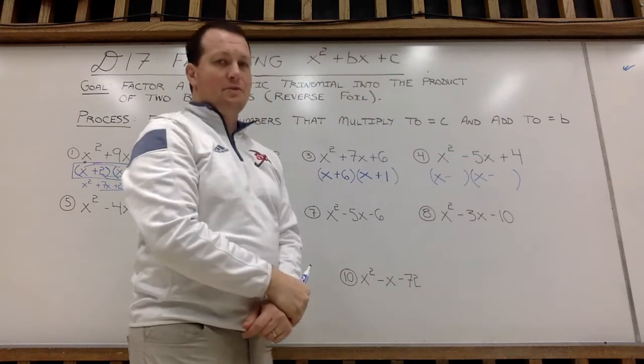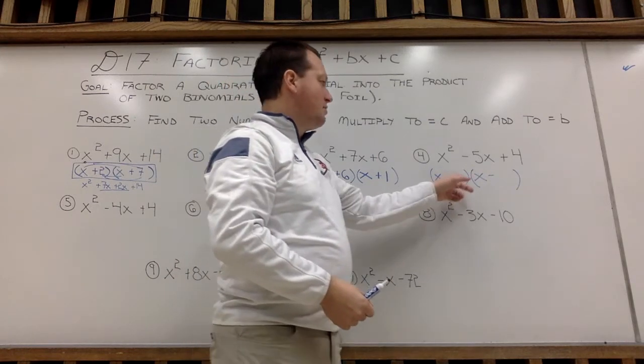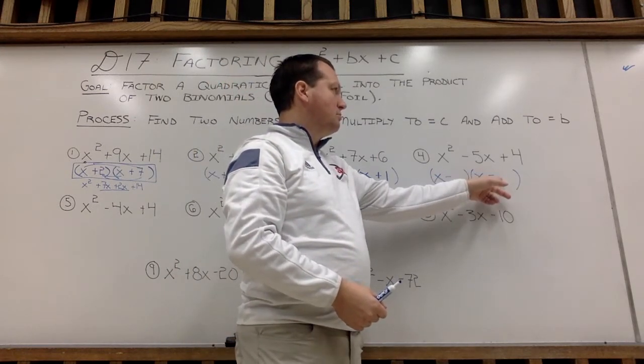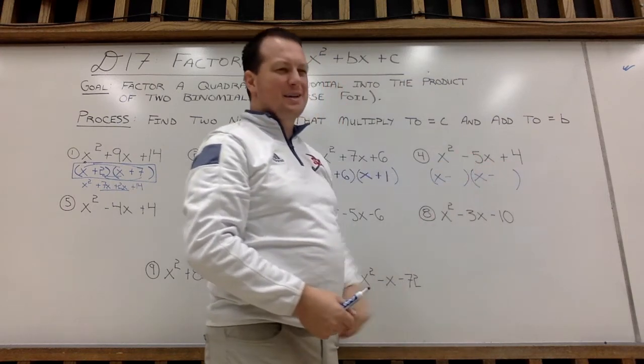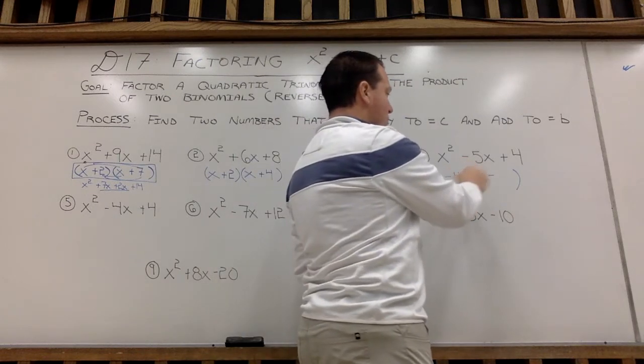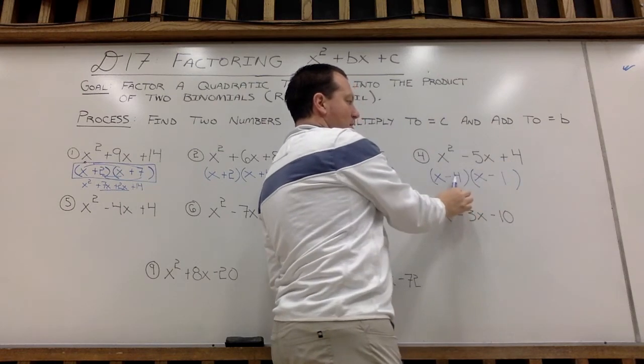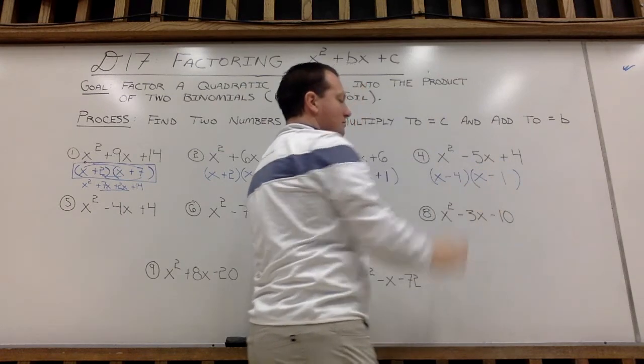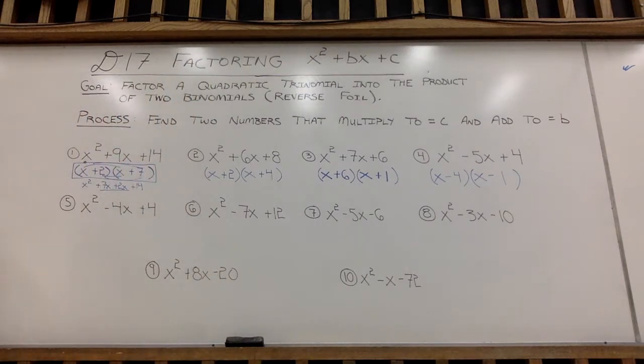So to get to 4, I can either go 2 times 2 or 1 times 4. 2 times 2, but negative 2 and negative 2 don't make negative 5. So I need to go minus 4, minus 1. Negative 4 times negative 1, positive 4. Negative 4 plus negative 1, negative 5. All right, 4 down. Let's keep the party going here.